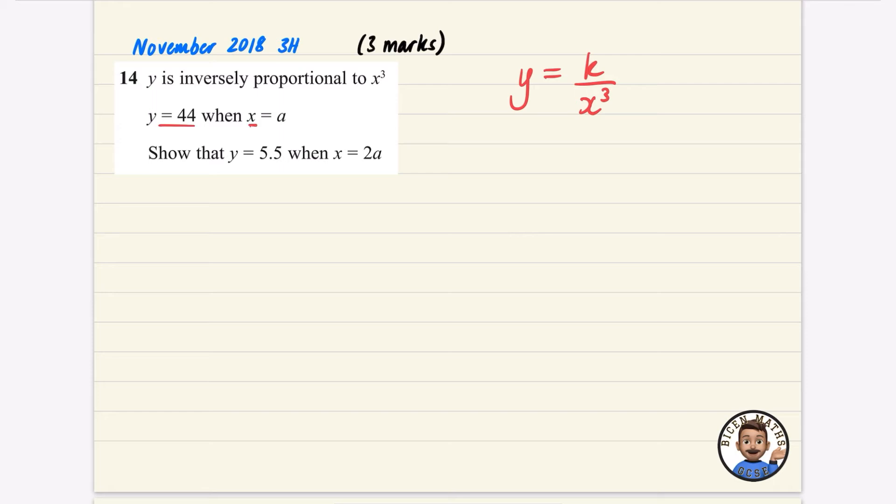When Y is 44, X is A. So when Y is 44, X is equal to A. In other words, just A cubed. As usual, we're going to find out what K is equal to. So I'm going to do 44A cubed equals K.